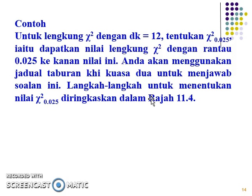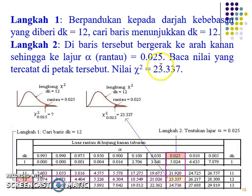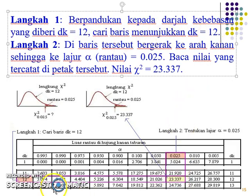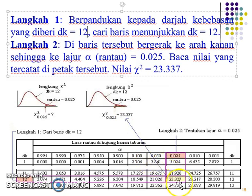For example, given degrees of freedom of 12 and alpha of 0.025, the area under the curve is 23.337. If we calculate our chi-value and find it is less than 23.337, we fail to reject the null. But if our chi-value is more than 23.337, we reject the null — meaning there is a significant proportion difference between two groups.